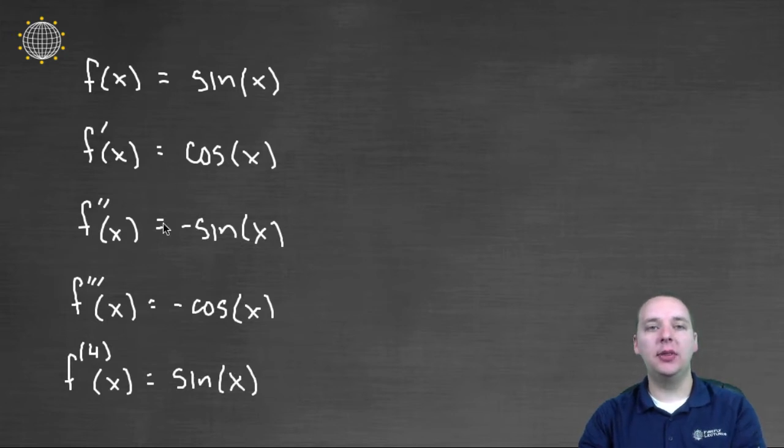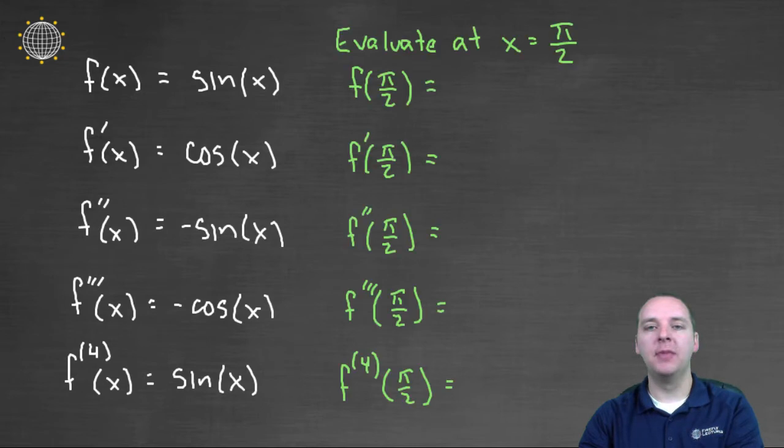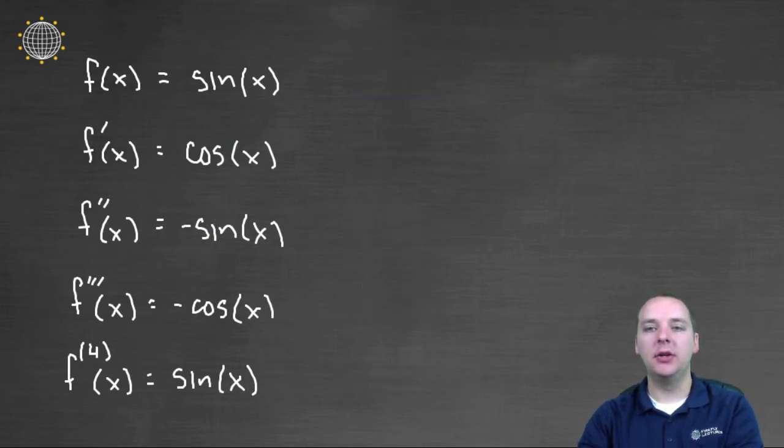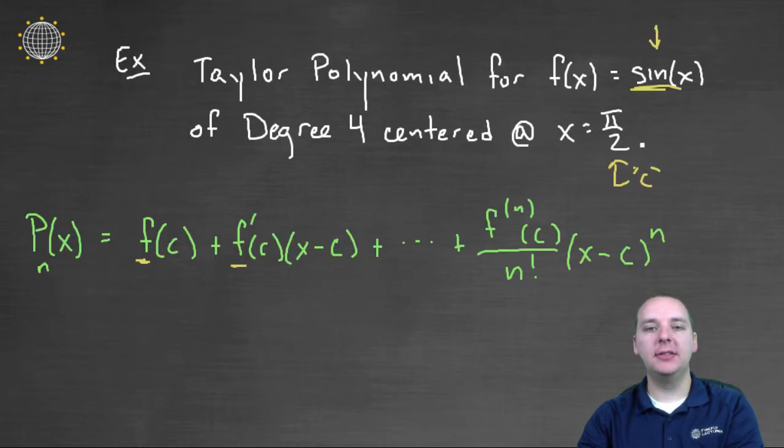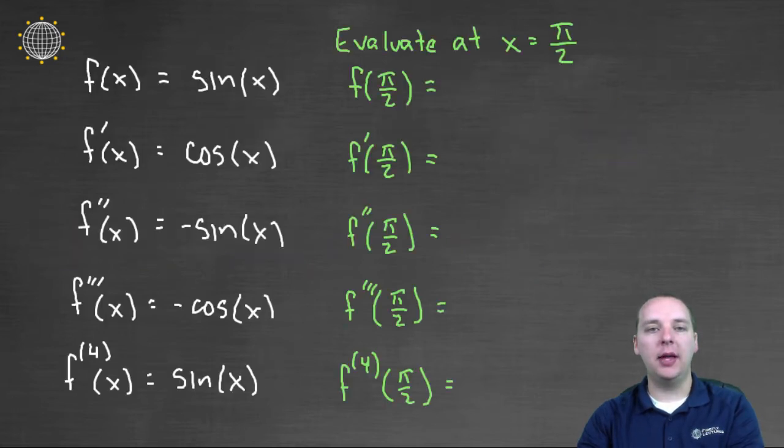Now I actually have to do something with them. I have to evaluate these guys at the center, in this case pi over two. These derivatives are of no use to me as is. I actually have to evaluate them at the center first, because the formula says f of c, f prime at c, and the nth derivative at c, where c is pi over two.